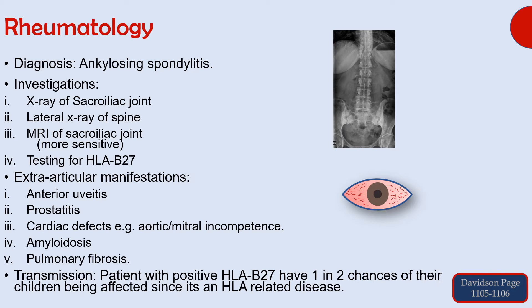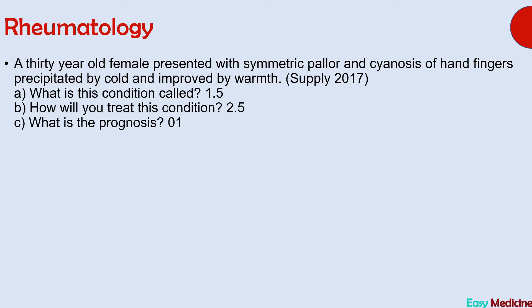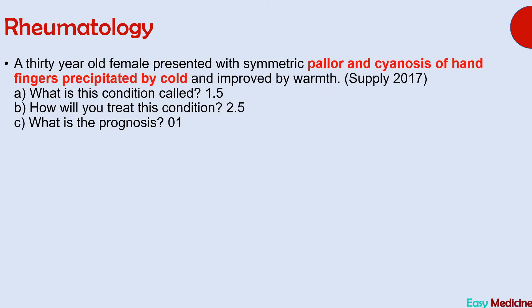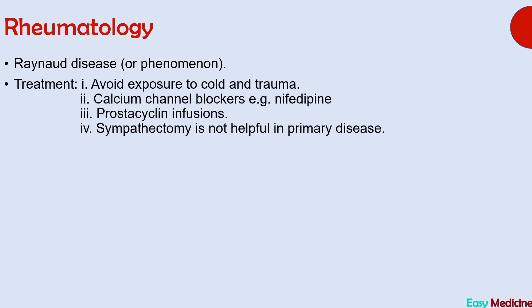The diagnosis for the next question is Raynaud's disease. The points which led to this diagnosis are pallor and cyanosis of hand fingers precipitated by cold. The treatment for Raynaud's disease is: avoiding exposure to cold and trauma, calcium channel blockers (e.g., nifedipine), and prostacycline infusions. An important point is that sympathectomy is not helpful in primary disease.